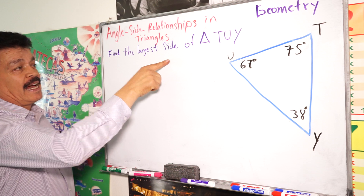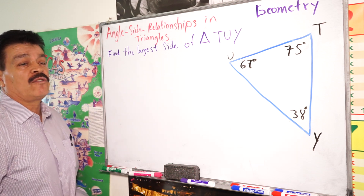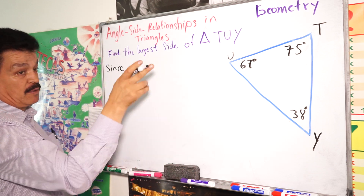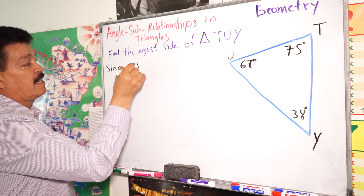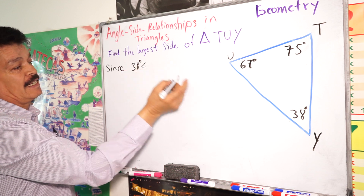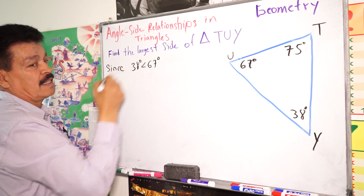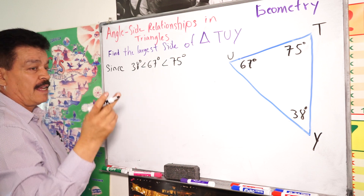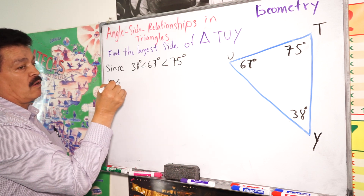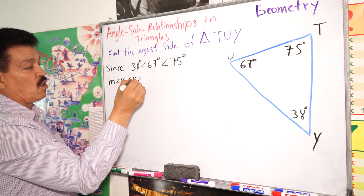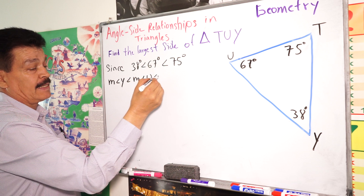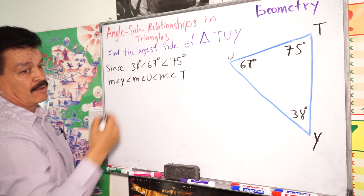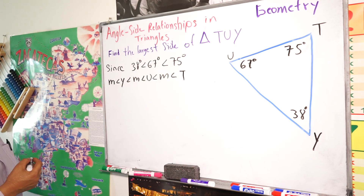Let's find the longest side of triangle TUY. First, write the angles in order. Since 38 degrees is less than 67 degrees, and 67 degrees is less than 75 degrees, then the measure of angle Y is less than the measure of angle U, which is less than the measure of angle T.